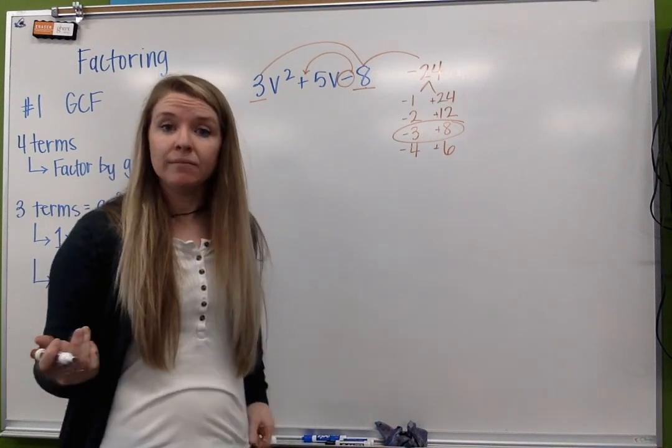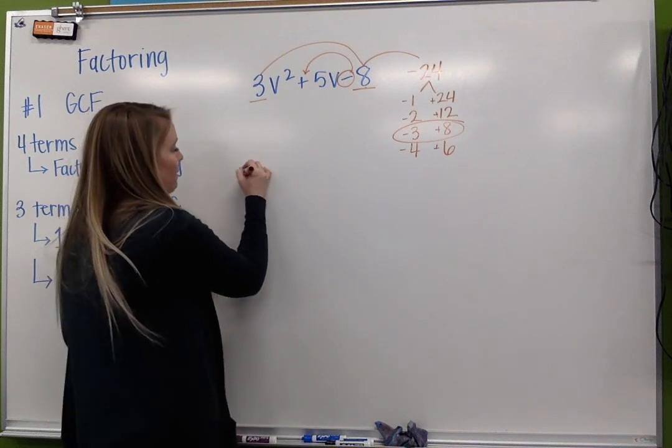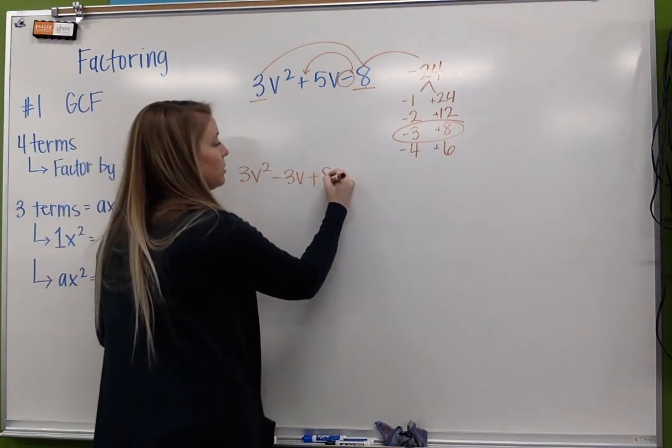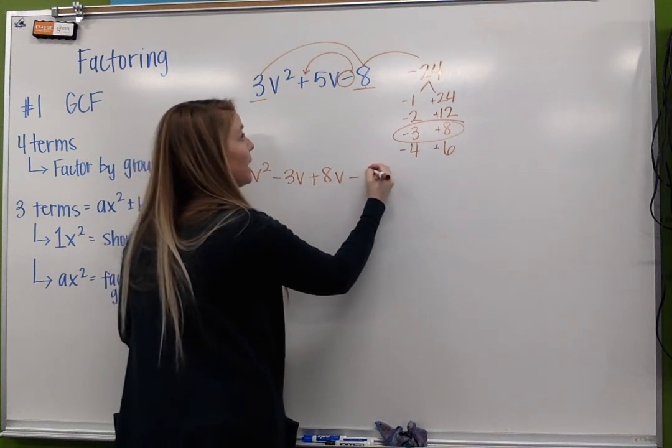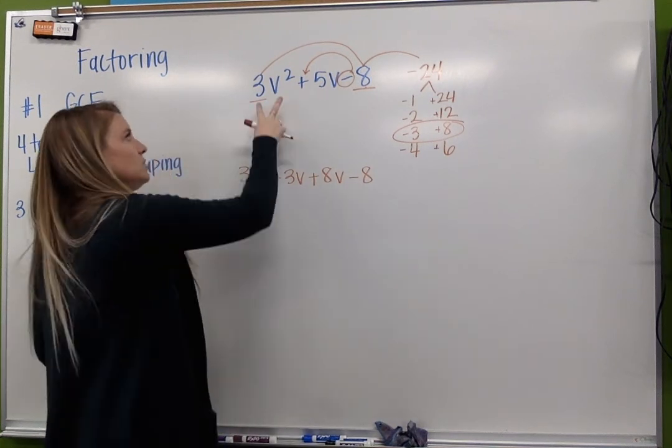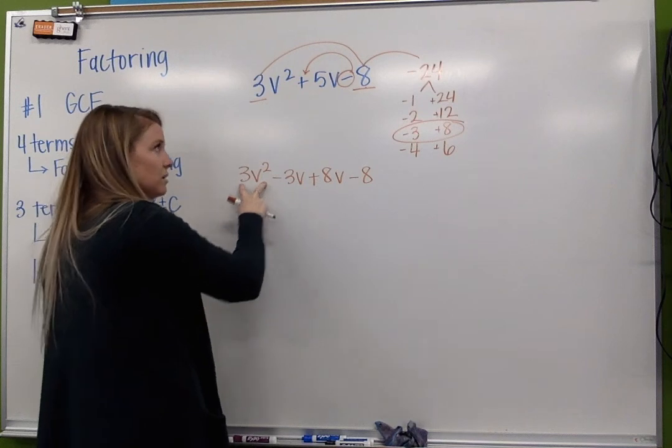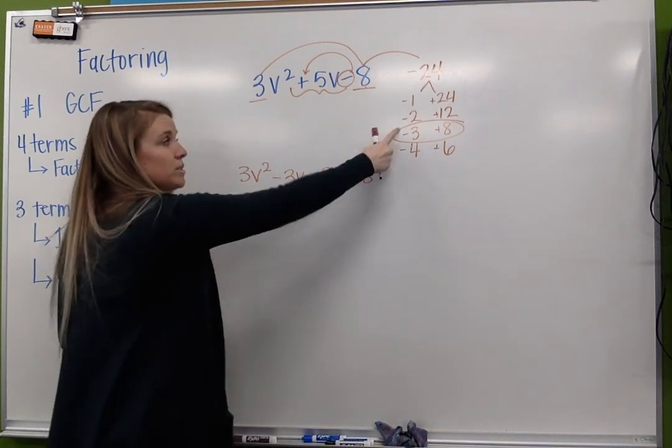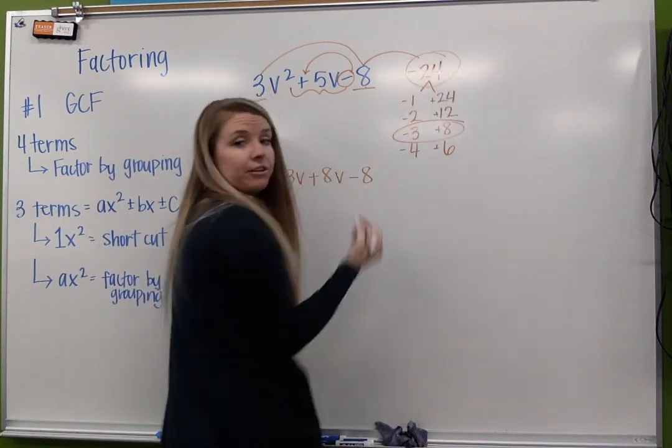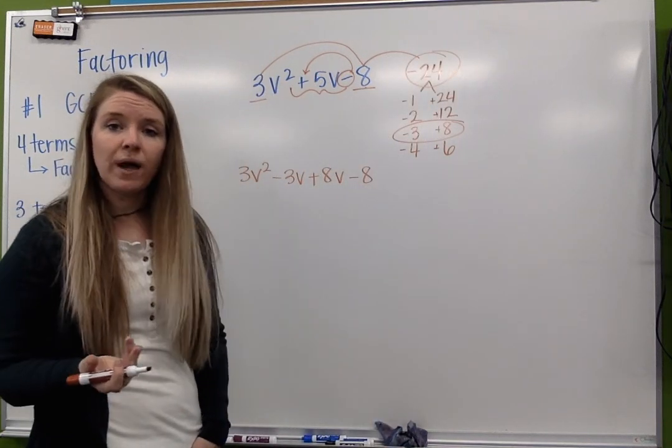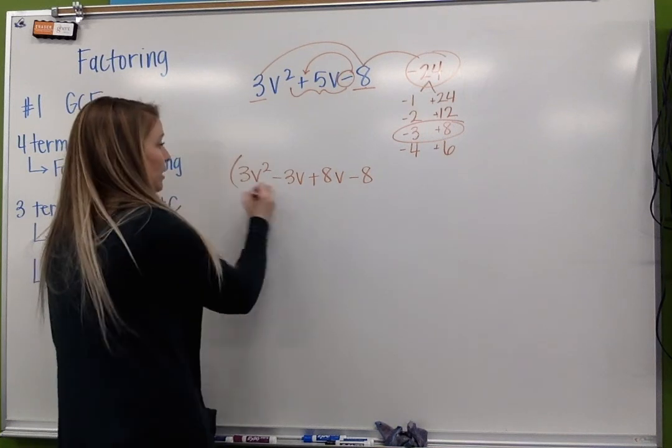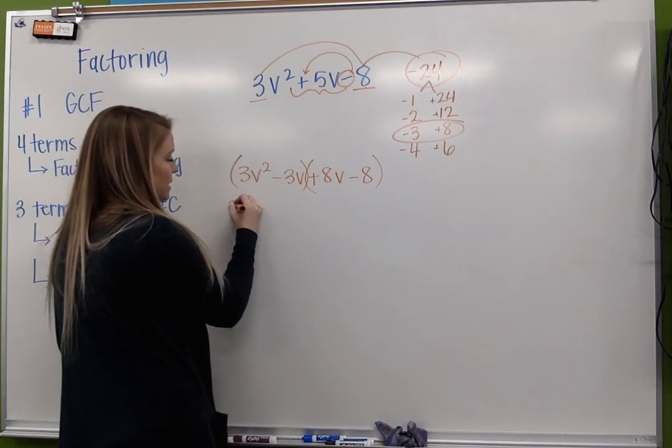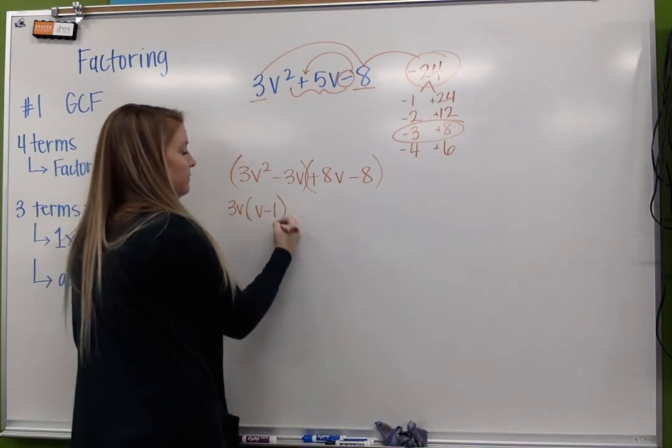And then we just rewrite it. So now I have 3v² - 3v + 8v - 8. So we use the 3v² squared, the negative 8, and we split the 5 using our factors from our reference number. And then it's just factoring by grouping. I group.